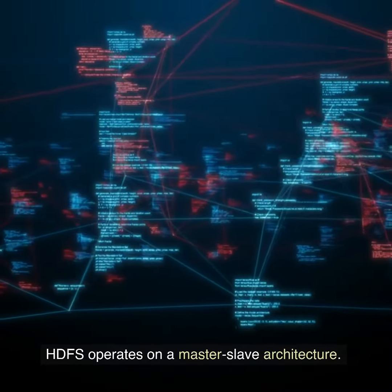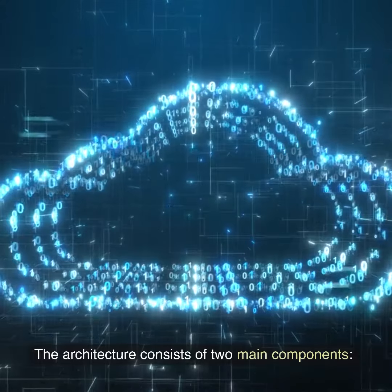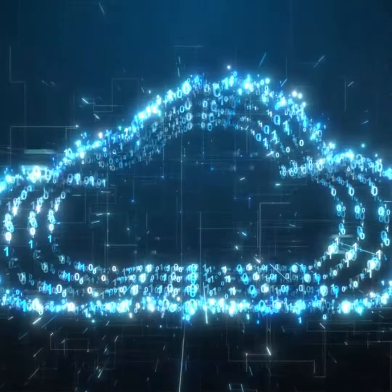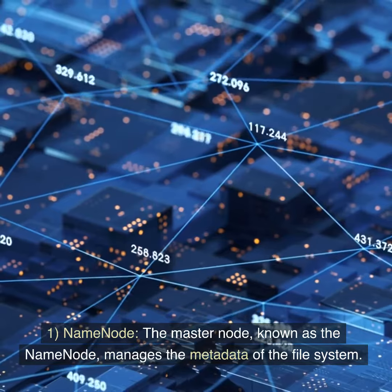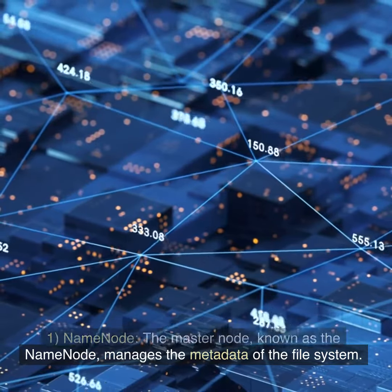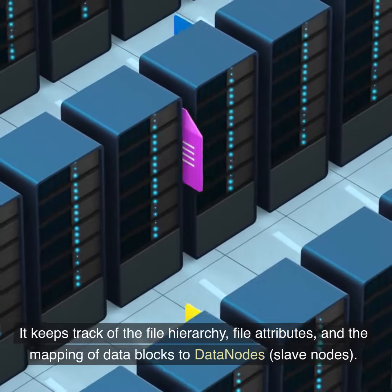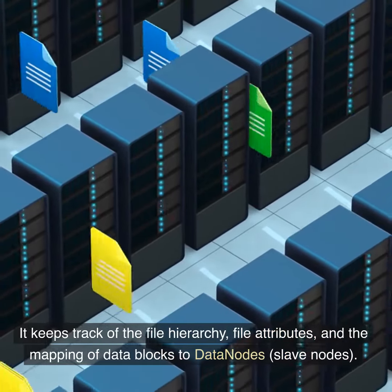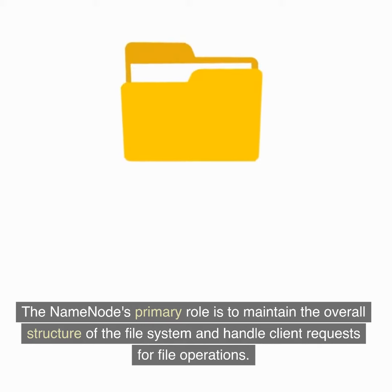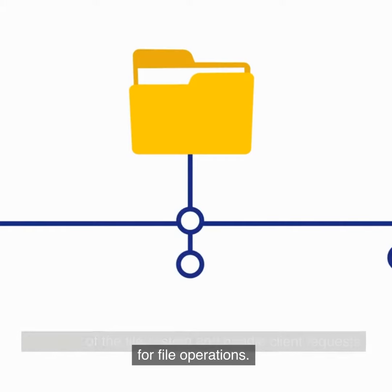HDFS operates on a master-slave architecture, consisting of two main components. The master node, known as the name node, manages the metadata of the file system. It keeps track of the file hierarchy, file attributes, and the mapping of data blocks to data nodes — the slave nodes. The name node's primary role is to maintain the overall structure of the file system and handle client requests for file operations.